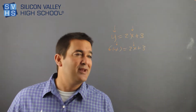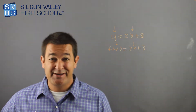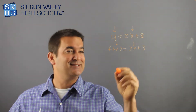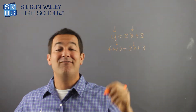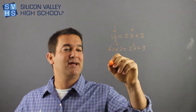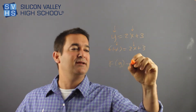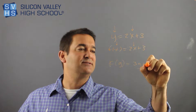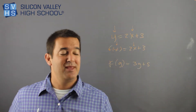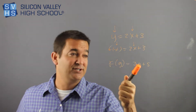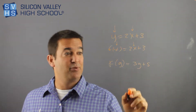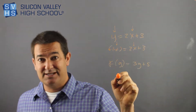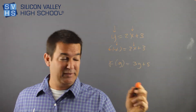But now that I'm older and nerdier and mathier, I get why they want to make the distinction. They might not have x and y. What if they said f of g equals 3g plus 5? Now this outcome is a function of g — whatever I put in for g, I get an output because of it.